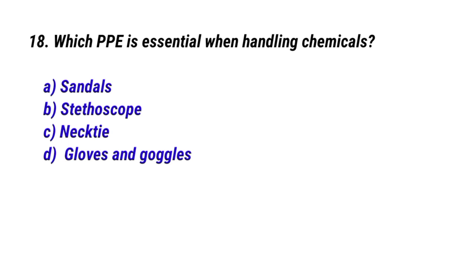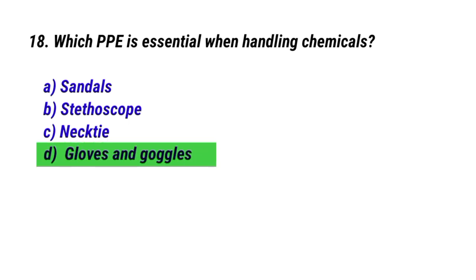Question No. 18: Which PPE is essential when handling chemicals? The right answer is Option D: Gloves and goggles.